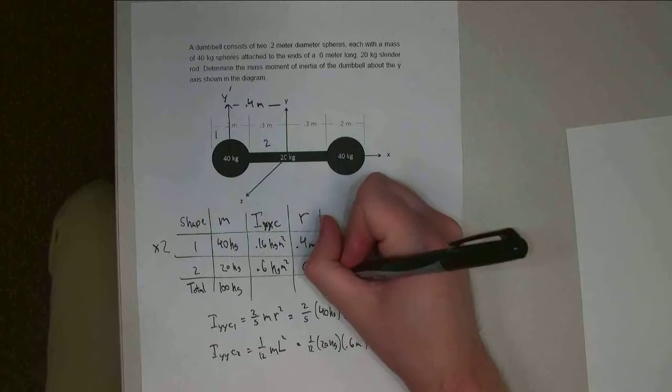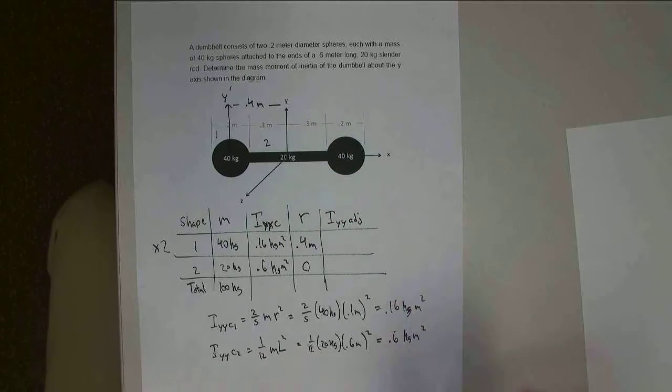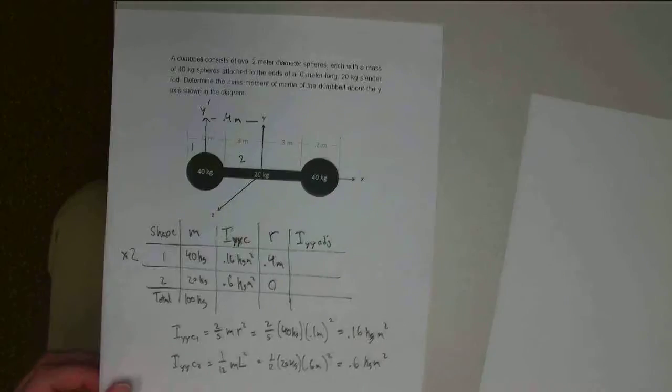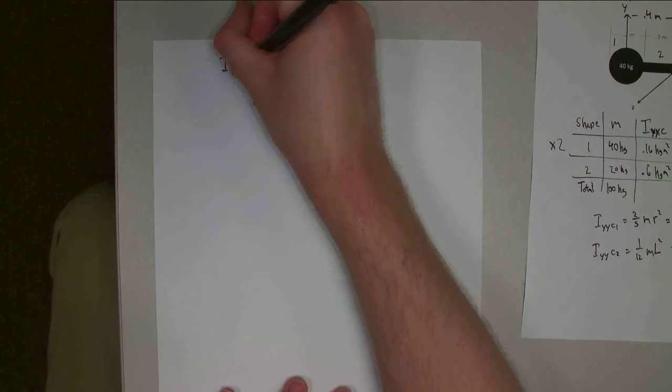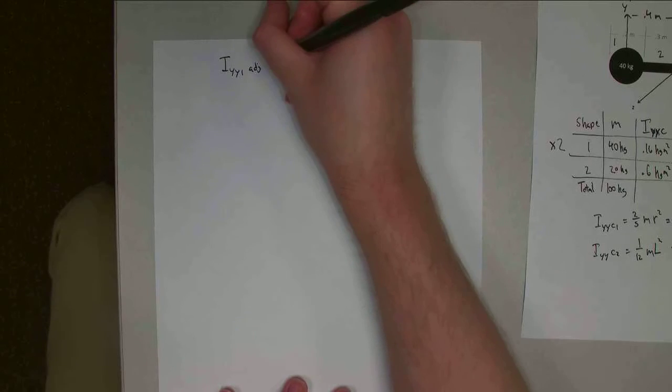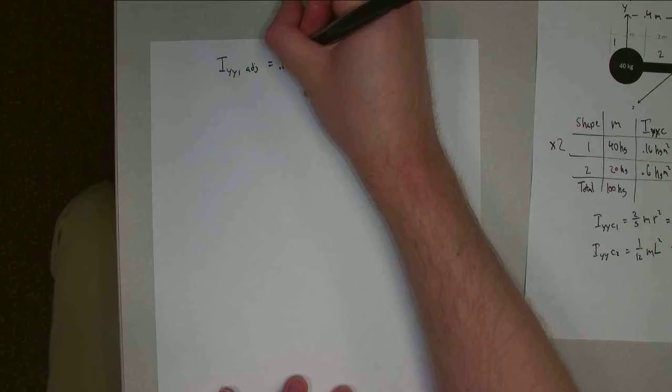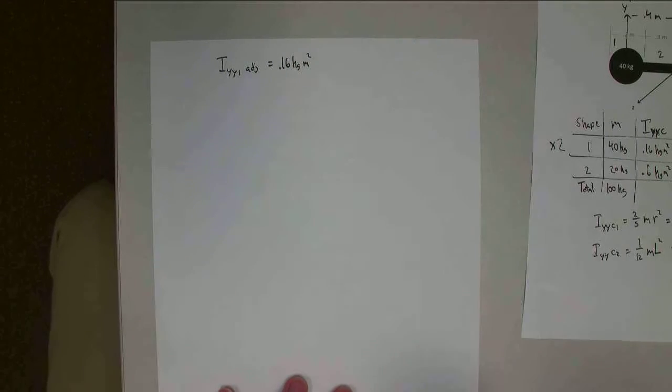All right, so now we are doing Iyy adjusted. And if we add together all the adjusted values, we find the overall shape. All right, so Iyy1 adjusted. This is the spheres on the end. It's going to be 0.16 kilogram meters squared. That's my original value.